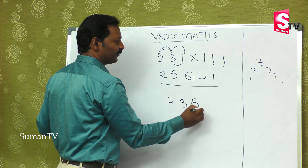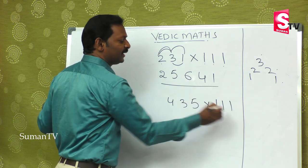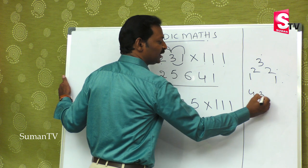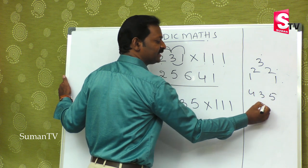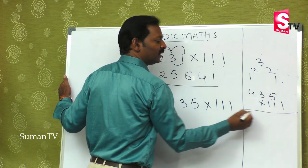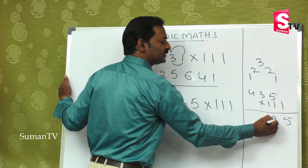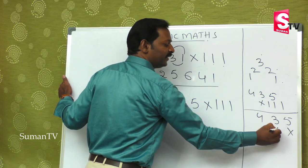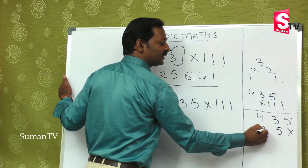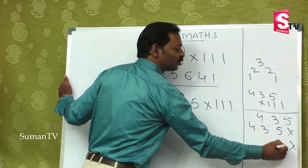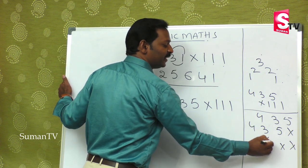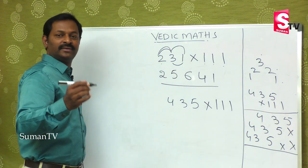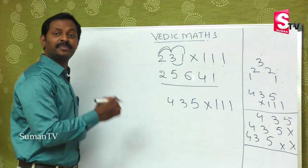So 435 multiplied by 111. Follow this process: 1×5=5, 1×3=3, 1×4=4. Leave one place, then again 1×5, 1×3, 1×4. Leave one and two places, again 1×5, 1×3, 1×4. That is the lengthiest process.